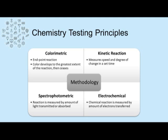Different testing methodologies found in the clinical chemistry lab include colorimetric methodology, which is an endpoint reaction where color develops to the greatest extent of the reaction and then ceases. There are also kinetic reactions, which measure the speed and degree of change over a set period of time. Spectrophotometric reactions measure the amount of light transmitted or absorbed by the reagent pad. Electrochemical reactions measure the amount of electrons transferred, and this is how electrolytes are measured.